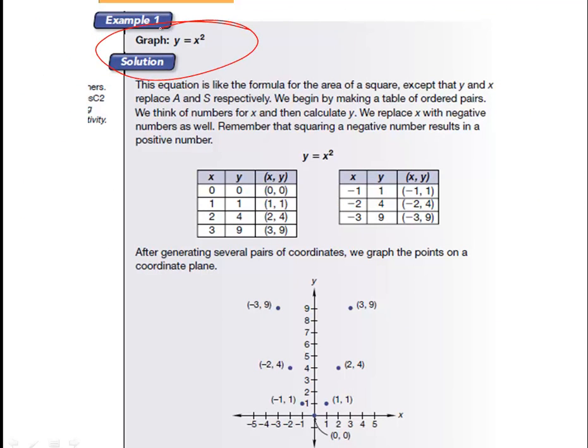It says graph y equals x squared. Well, this should be pretty easy. We're just going to plug and chug here. So for x, we're going to put in a number, and it's going to tell us what y is. So if we put in 0, 0 times 0 is 0. So we go ahead and we plot that. 1 times 1 is 1. 2 times 2 is 4. 3 times 3 is 9.